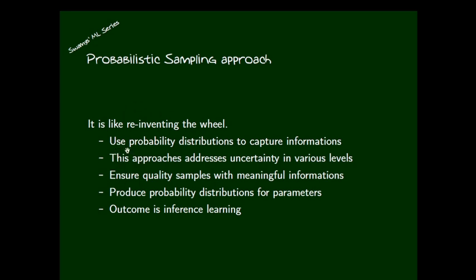The first basic point is to use probability distributions to capture information. In traditional statistics we make use of mean and variance — these are fixed values — and we try to generalize them to the population. But in the probabilistic approach, we are not stuck on fixed values. We try to generate distributions for these parameters. If you get a distribution, it contains all the information related to the data.